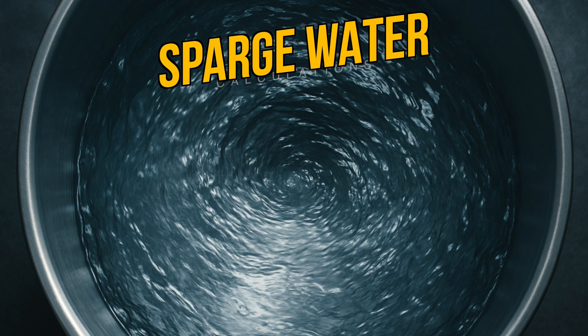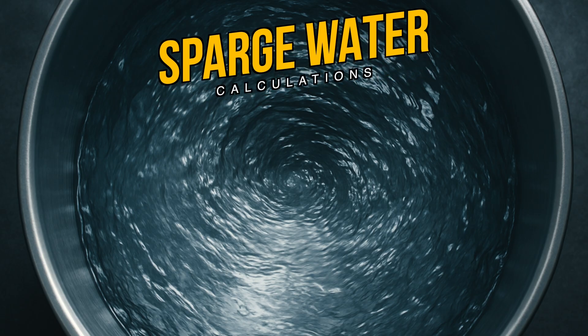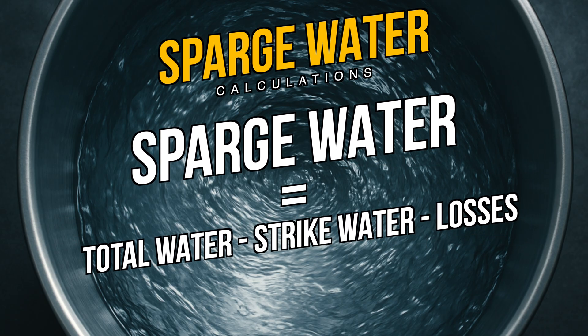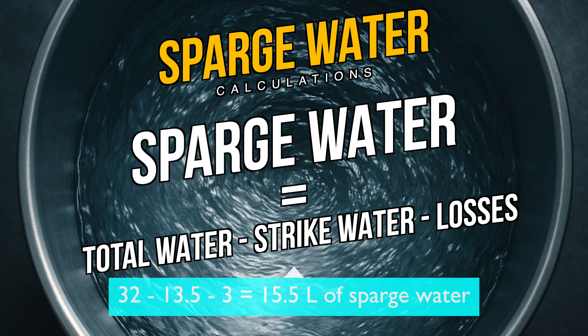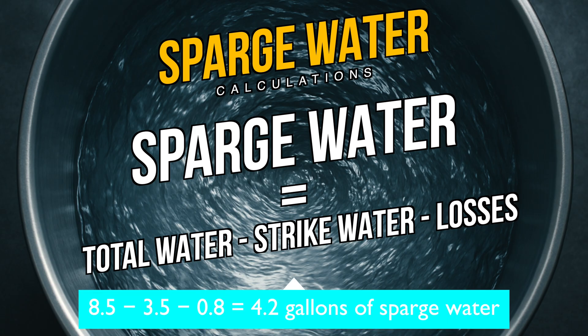Now let's look at the sparge water. This replaces your losses as discussed earlier. The simple calculation is: sparge water equals total water minus strike water minus losses. For example in metric: if your total volume needed is 32 litres, you've already used 13.5 litres for your mash, and your system losses are 3 litres, then you will need 15.5 litres of sparge water. In imperial: if your total water needed is 8.5 gallons, you've used 3.5 gallons for the mash, and system losses are 0.8 gallons, then you need 4.2 gallons of sparge water.